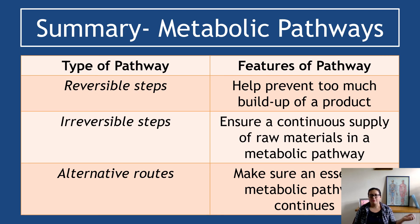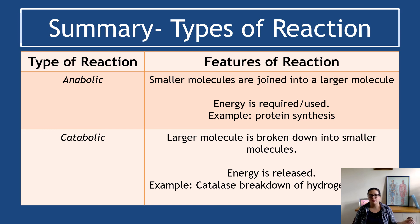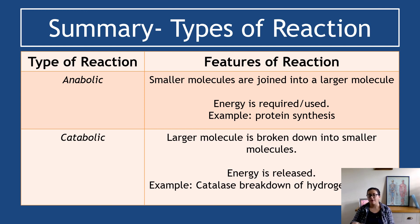To summarize on metabolic pathways: reversible steps help prevent too much buildup of a product. Irreversible steps ensure a continuous supply of raw materials. An alternative route makes sure an essential metabolic pathway continues despite buildup or to avoid buildup of metabolites. Anabolic reactions are smaller molecules joined to larger molecules — energy is required, and an example is protein synthesis. In a catabolic reaction, larger molecules are broken down into smaller molecules, energy is released, and an example is the catalase breakdown of hydrogen peroxide into oxygen and water. The next video looks at enzymes.